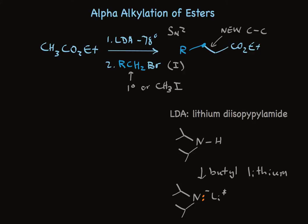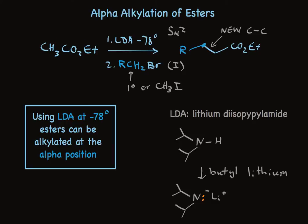If all this seems pretty familiar to you, you're really on target. Using these very same conditions, a ketone can be alkylated at the alpha-carbon. So the take-home here is simple. Using LDA at minus 78 degrees lets you alkylate esters at the alpha position.